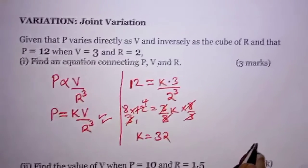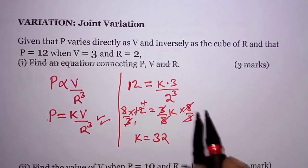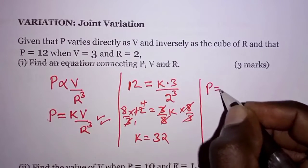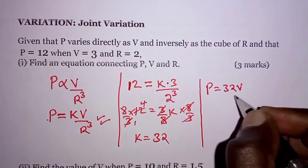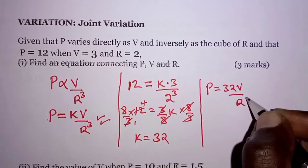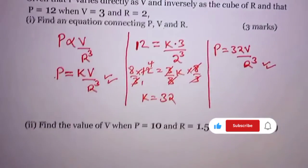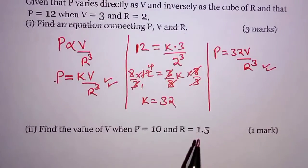So if K is 32, then coming back to this equation here, we will have P is equal to, and K is 32, so 32 V all over R cubed. So that is the equation connecting P, V and R as desired.